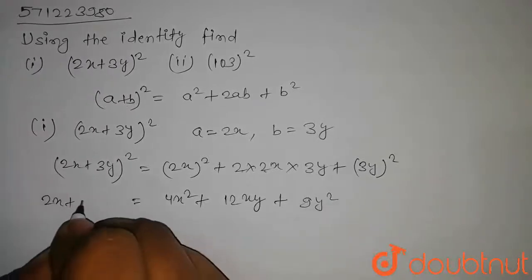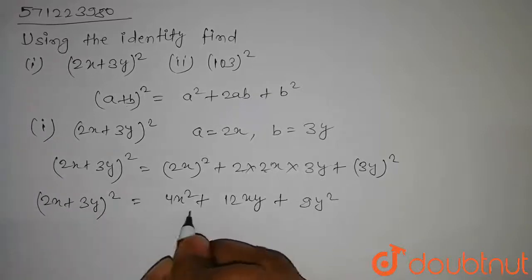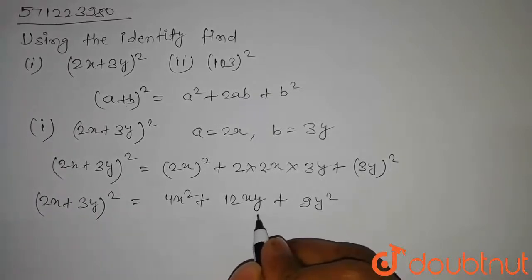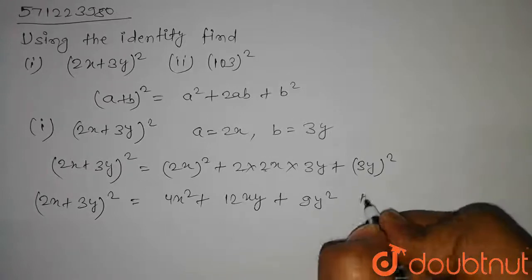We get (2x + 3y)² whole square is equal to 4x² plus 12xy plus 9y². This is our answer.